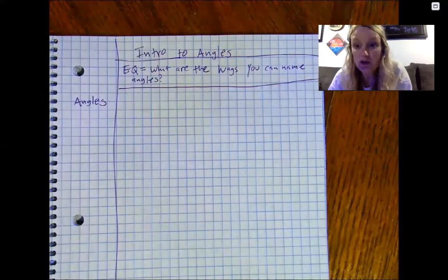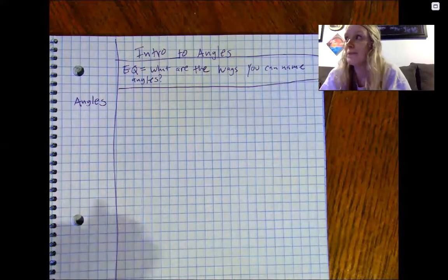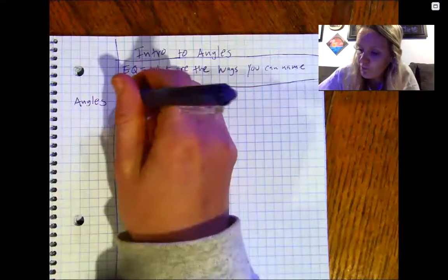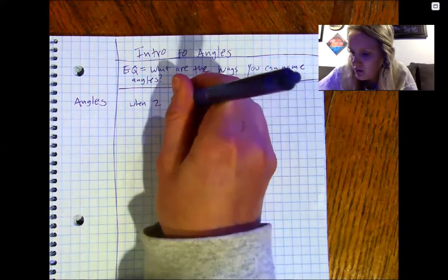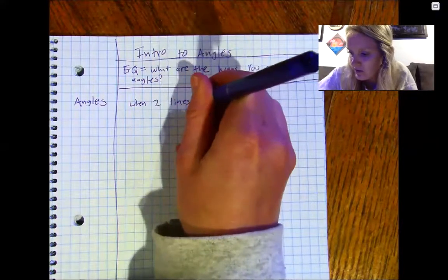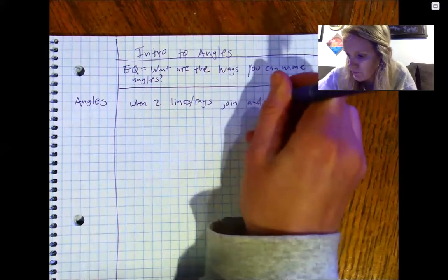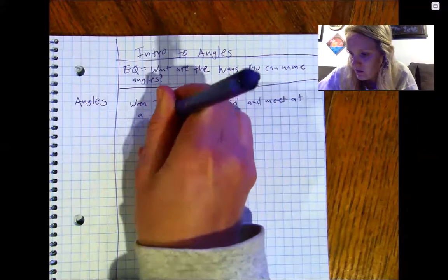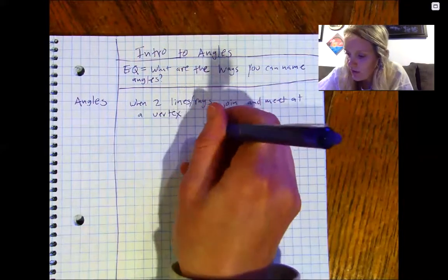Angles are created by the joining of two lines or two line segments that meet at a vertex. When two lines or rays join and meet at a vertex — so if I have that dot there — that's where the angle is formed.